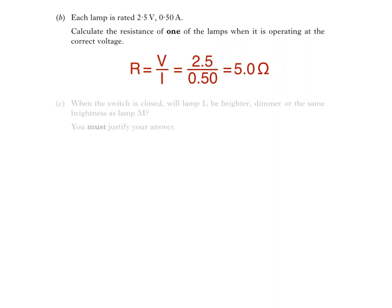Finally, we have part C of the question. When the switch is closed, will lamp L be brighter, dimmer, or the same brightness as lamp M? You must justify your answer.